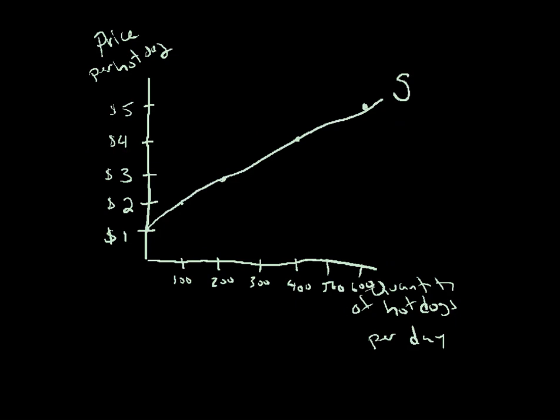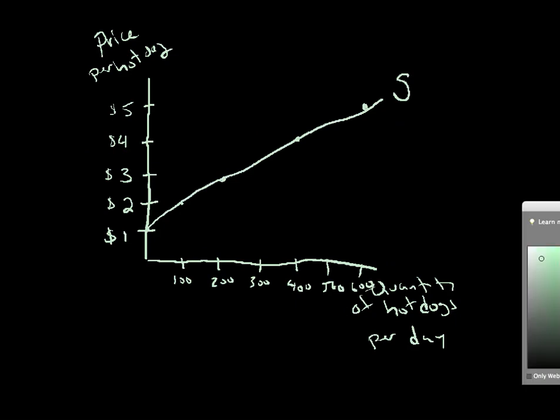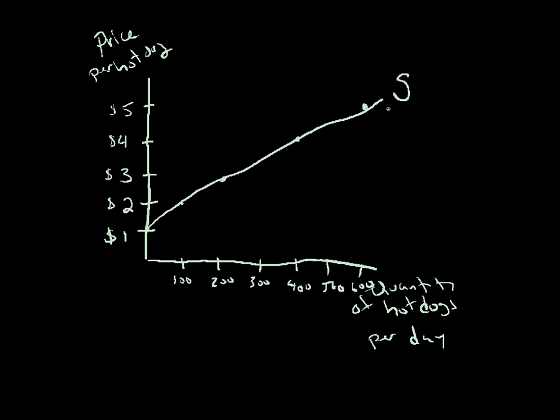Here's the deal. This supply idea has very much to do with cost. This is why. Think about it. Here's this particular line and each one of these particular dots represents how much he would supply if he could sell hot dogs for these dollar amounts. So, what's happening? When the price of a hot dog he could sell is $2, it's covering some of his costs.